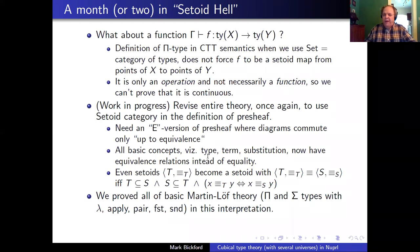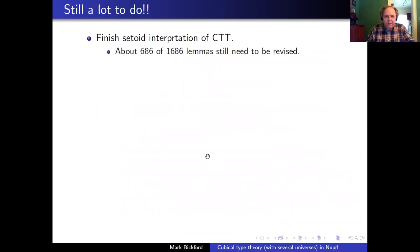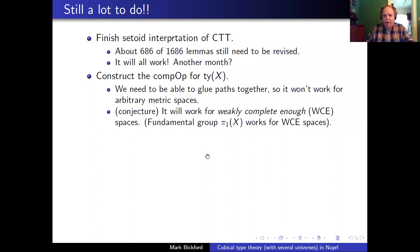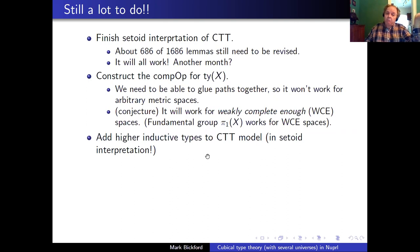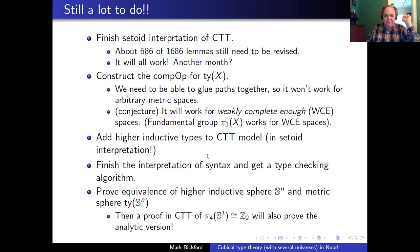I've done all the basic Martin-Löf type theory in this setoid interpretation — the pi and sigma types — and it turns out that the maps in the cubical model between metric spaces are the same as the continuous functions. I've done about a thousand lemmas and I still have a bunch left to go, but it's going to work — it's going to take me another month. Then I have to construct the uniform composition operator for these metric types, which requires gluing paths together; that won't work in an arbitrary metric space but works in metric spaces with a certain completeness property — weakly complete enough. Then I have to add the higher inductive types into the model using the setoid interpretation. If I do all of that, I could take Jan's proof that π₄(S³) is isomorphic to ℤ/2, and I will get the same theorem in constructive analysis from it.